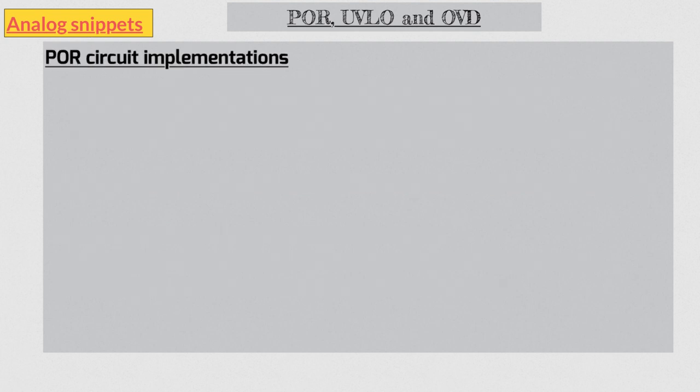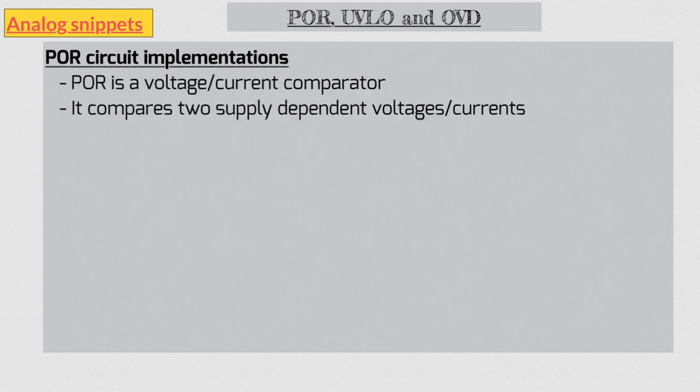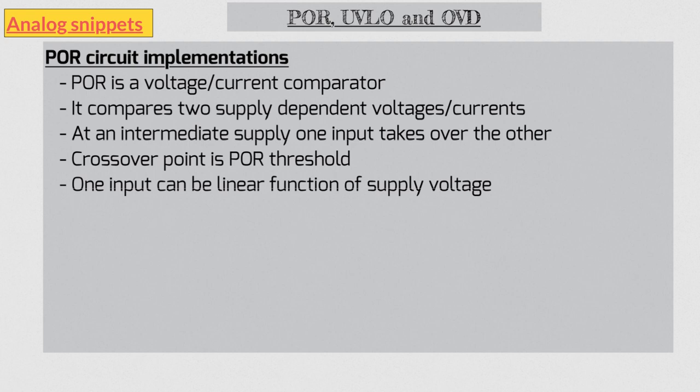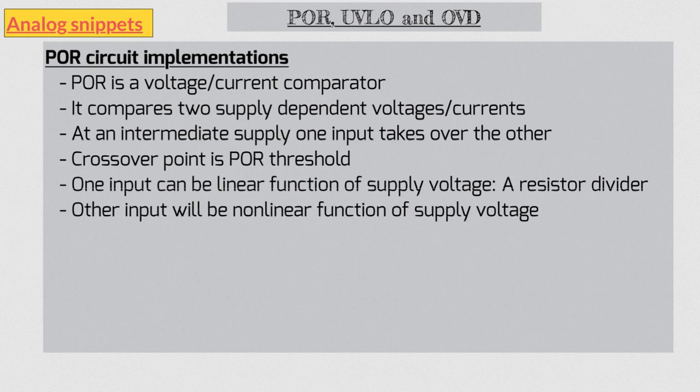PORs are usually voltage or current comparators which compare two supply-dependent voltages or currents. When the supply is ramped up from zero volts, there is an intermediate voltage where one voltage input takes over the other, and this crossover point is POR threshold. In the simplest implementation, one voltage is linearly dependent on the supply voltage, for example a simple resistor divider. The other input will be a non-linear function of supply voltage. In the beginning, this non-linear input is higher than the linear input, but rate of increase of non-linear input slows down as supply increases. So let's build a simple circuit which can do that.